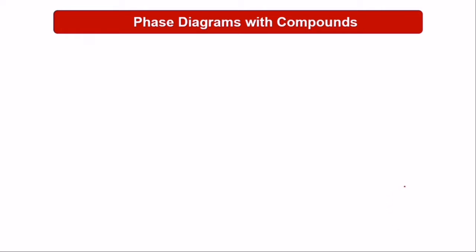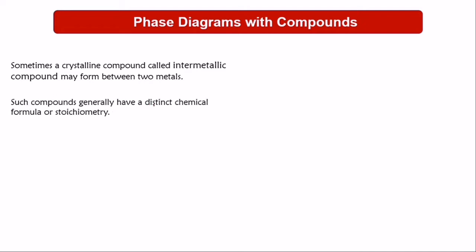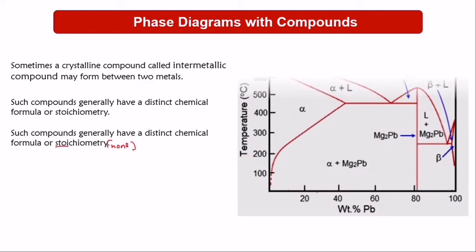We're going to talk about phase diagrams with compounds. Some phase diagrams have a compound in them, and this compound can be stoichiometric or non-stoichiometric. A crystal compound called an intermetallic compound may form between two metals. These intermetallic compounds might be stoichiometric or non-stoichiometric, and they generally have a distinct chemical formula.